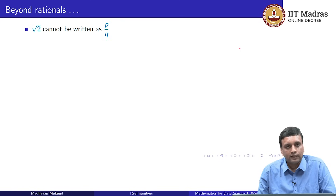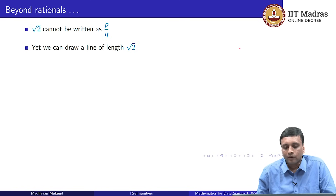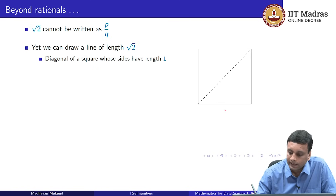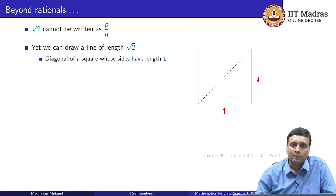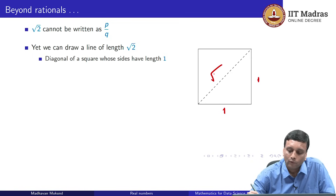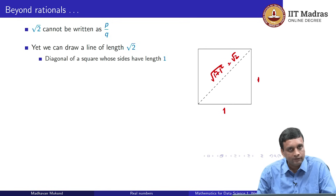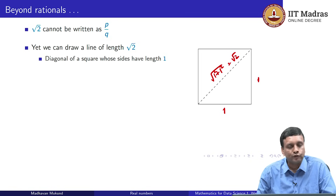This was certainly known to the ancient Greeks, in fact to Pythagoras. One way to see it is that you can actually draw a line of this length. If you take a square whose sides are 1, then by Pythagoras' theorem the hypotenuse of that triangle is the square root of 1 squared plus 1 squared, which is the square root of 2. So I can physically draw a line whose length is square root of 2 — it is a very real quantity. Nevertheless, square root of 2 cannot be written as a rational number p/q.